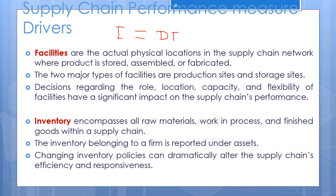Now let us understand the different components of inventory decisions. The first component is cycle inventory — the average amount of inventory used to satisfy demand between receipts of supplier shipments. The size of cycle inventory is a result of producing, transporting, or purchasing material in large lots. Companies produce or purchase in large lots to exploit economies of scale in production, transportation, and purchasing, but an increase in lot size also brings an increase in carrying costs.